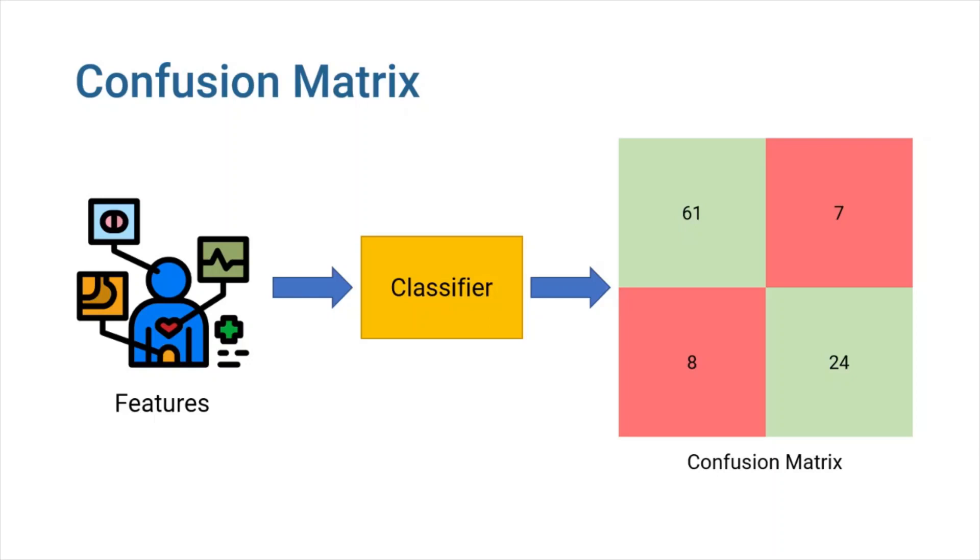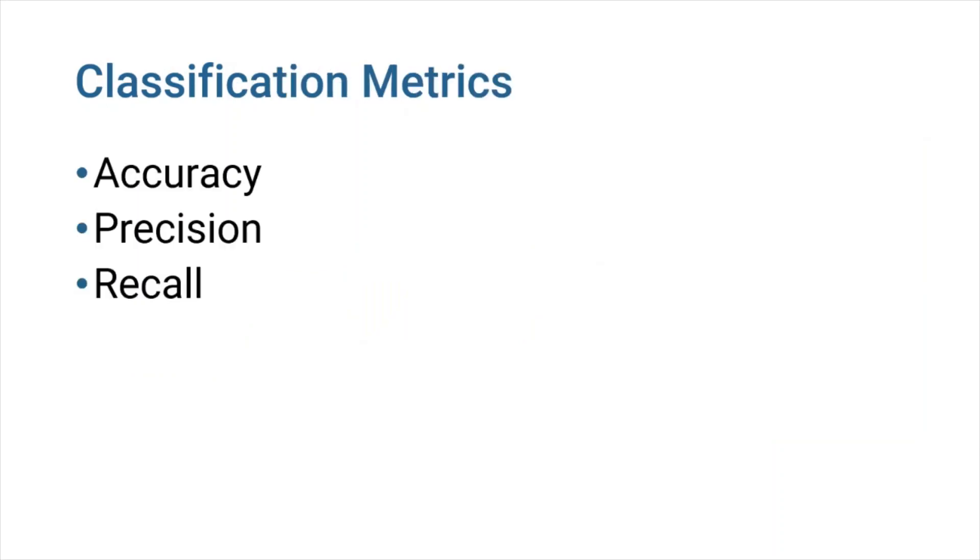So far, we've seen that the confusion matrix is an excellent tool for model evaluation, as well as a creative method to illustrate our model's performance. Now that we are familiar with confusion matrices, we can learn about several other important metrics as well. The metrics that I want to talk about are accuracy, precision, and recall. Let's start with accuracy.